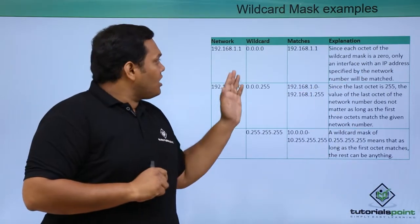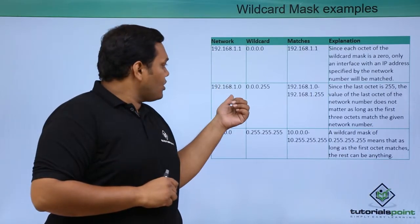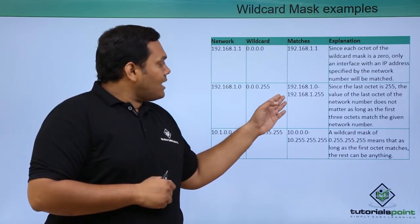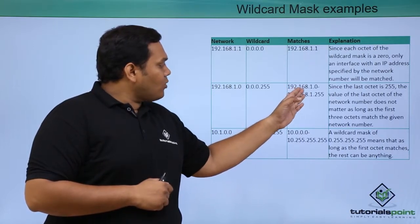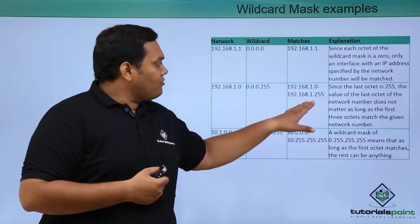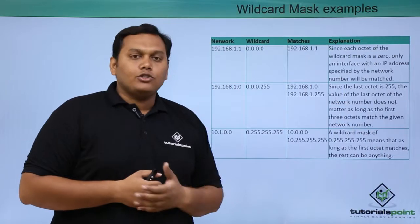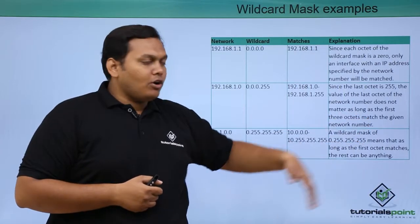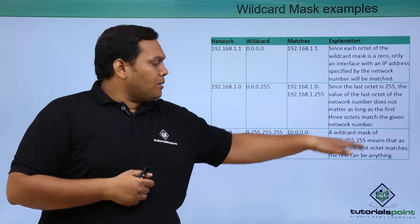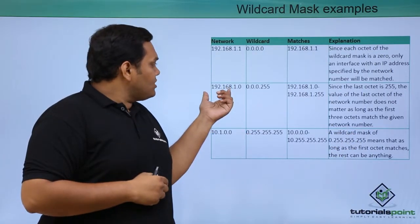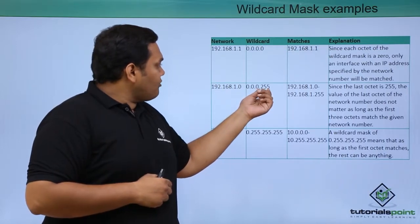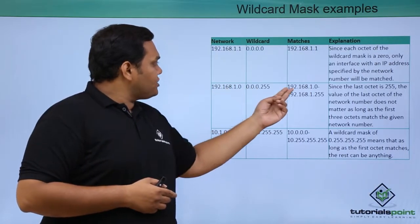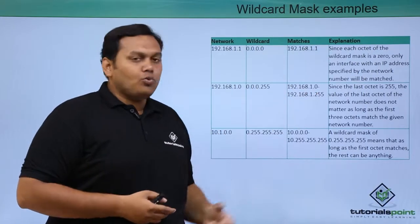For the network 192.168.1.0 with wildcard mask 0.0.0.255, the range is 192.168.1.0 to 192.168.1.255. Since the last octet is 255, the value of the last octet does not matter as long as the first three octets match with the given network number, so it covers the range 1.0 to 1.255.